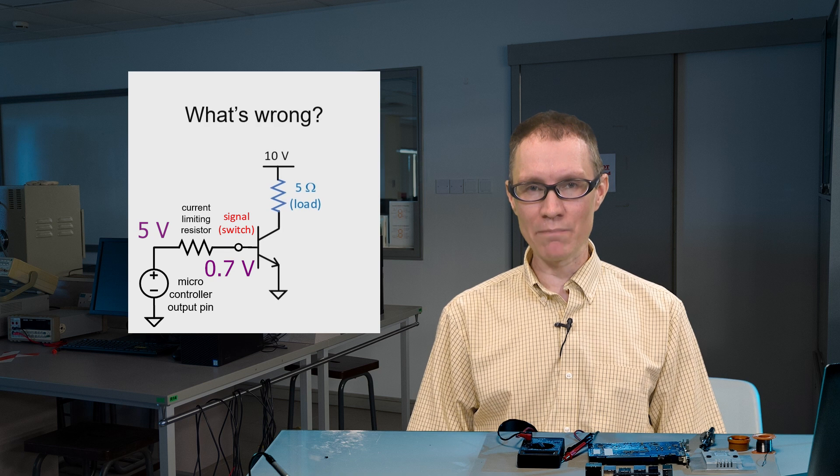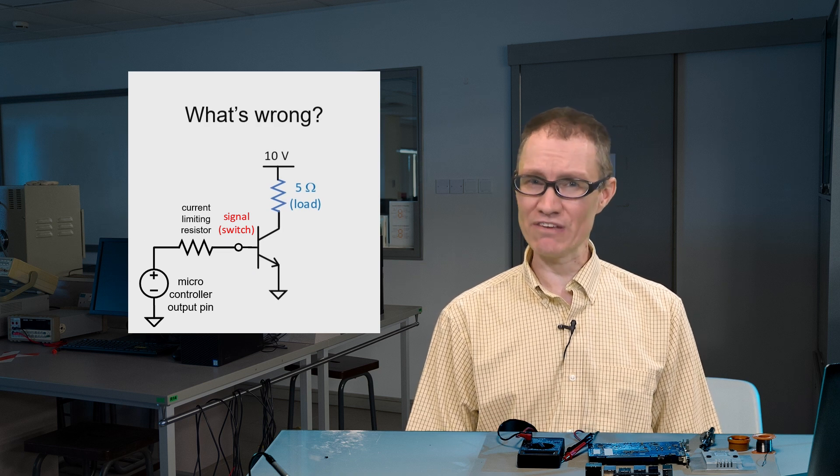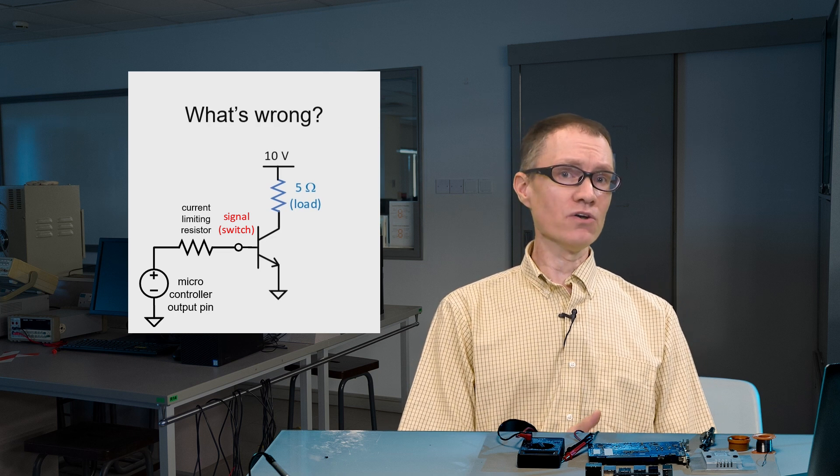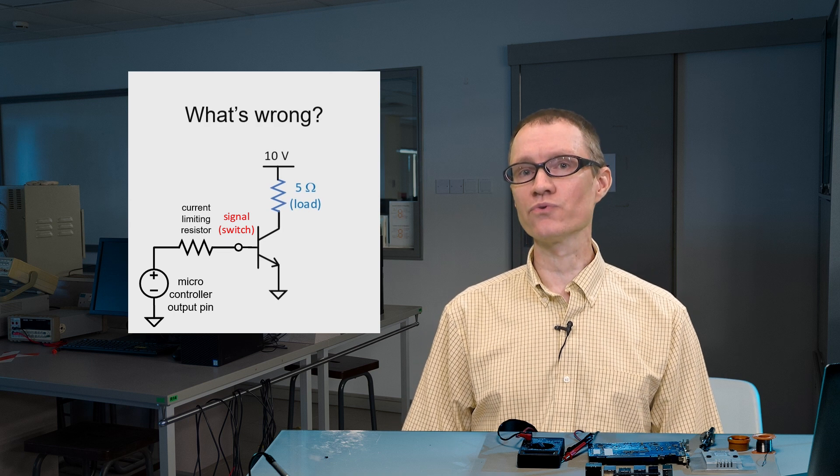Now again, what's the problem? Well you might notice that the load is only 5 ohms. That's going to give us substantial current through the load, which also means we'll have perhaps substantial current through the base.